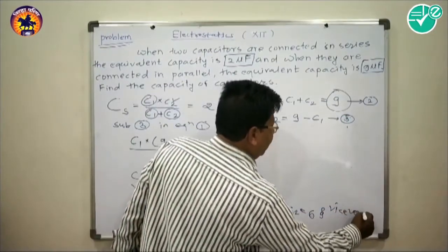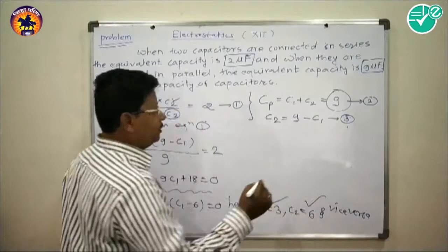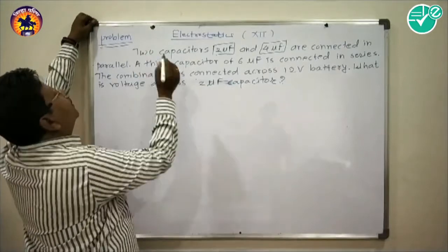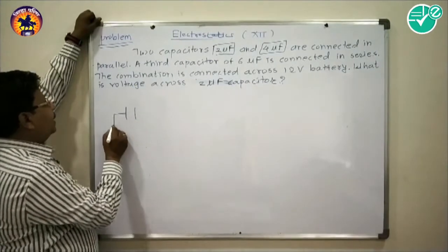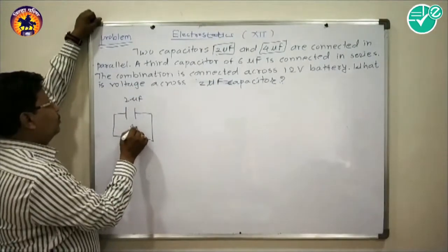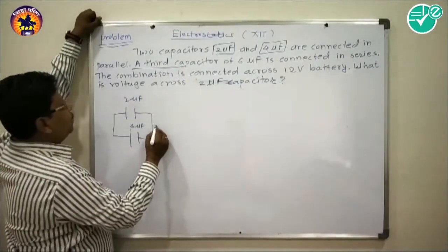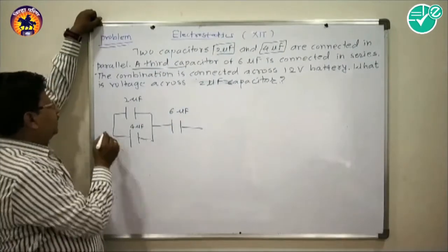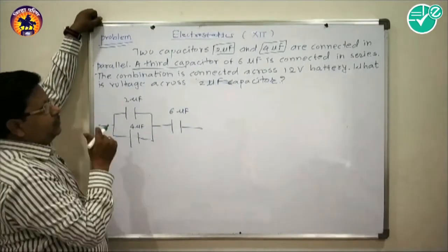The values are C1 = 3 microfarads and C2 = 6 microfarads. In the next problem, two capacitors of 2 microfarad and 4 microfarad are connected in parallel, and a third capacitor of 6 microfarad is connected in series with that parallel combination.